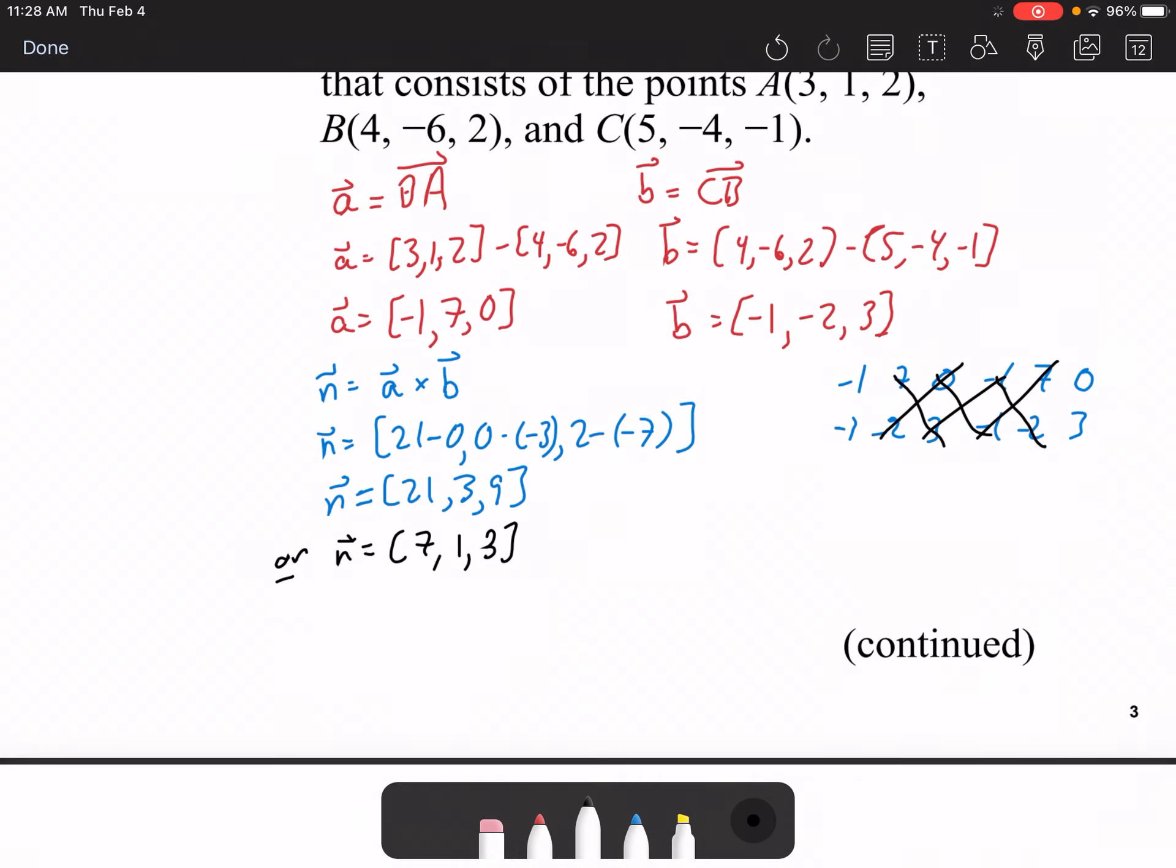Okay, so now the information we have based on this is, 7x plus y plus 3z plus d equals 0 is our scalar equation of a plane.